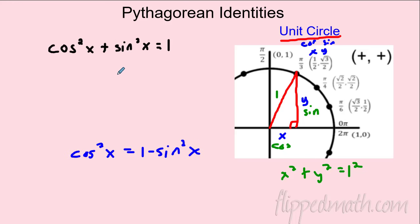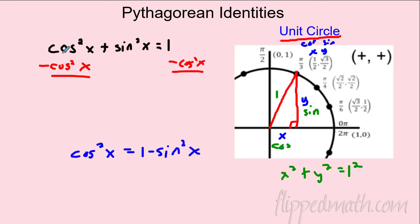We can also solve for sine. Subtract cosine squared from both sides, the cosine squared terms cancel, and we get another identity: sine² x = 1 − cosine² x.